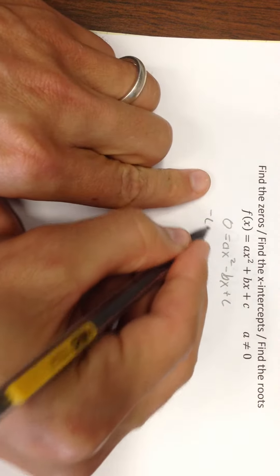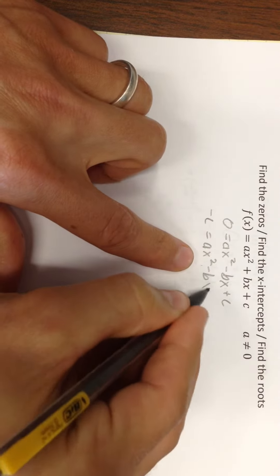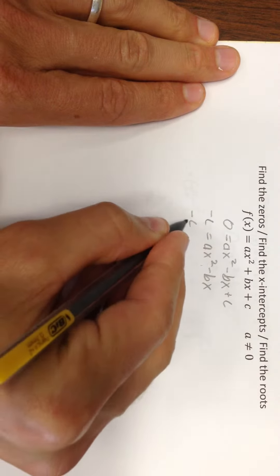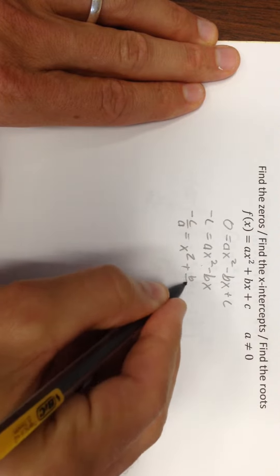I might subtract c over to the other side to start with. I'm really trying to get x by itself, so maybe I'll divide by a. So -c/a = x² + (b/a)x.